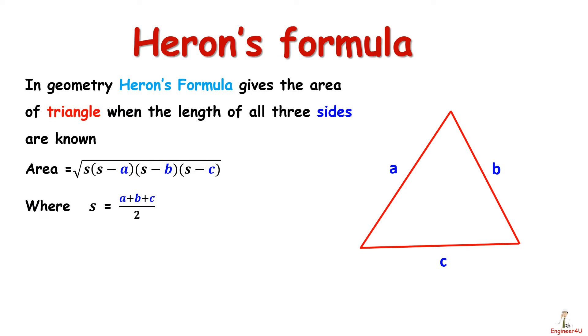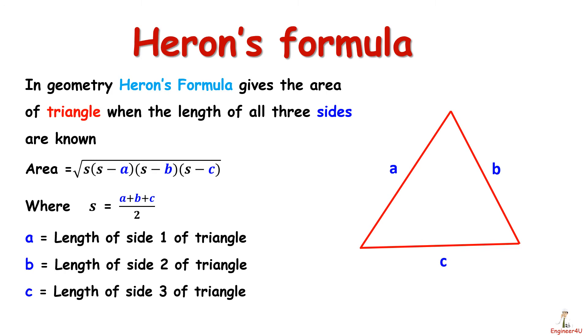Where S is equal to (A plus B plus C) divided by 2. A is equal to length of side 1 of triangle, B is length of side 2 of triangle, and C is equal to length of side 3 of triangle.